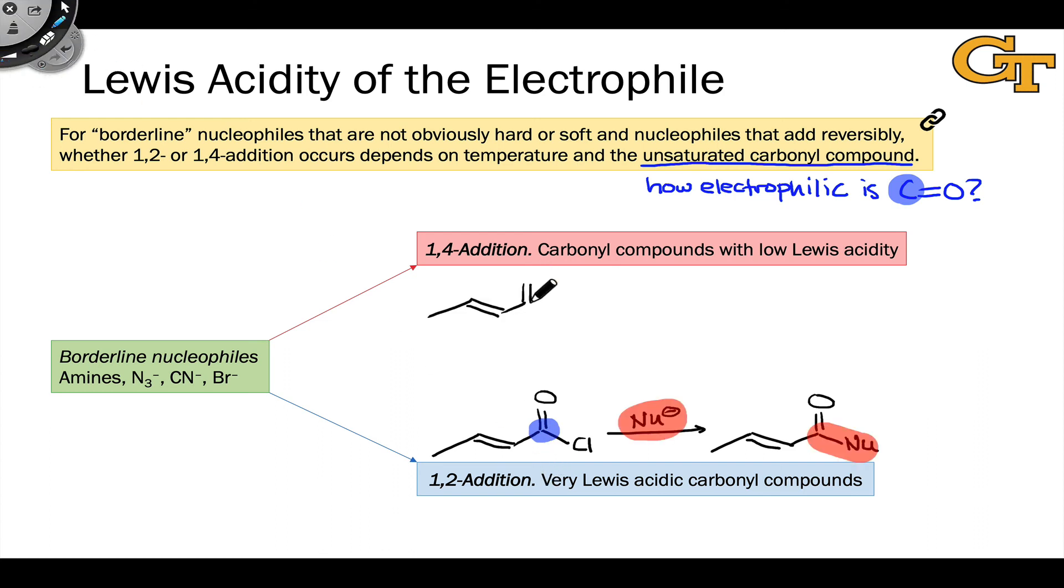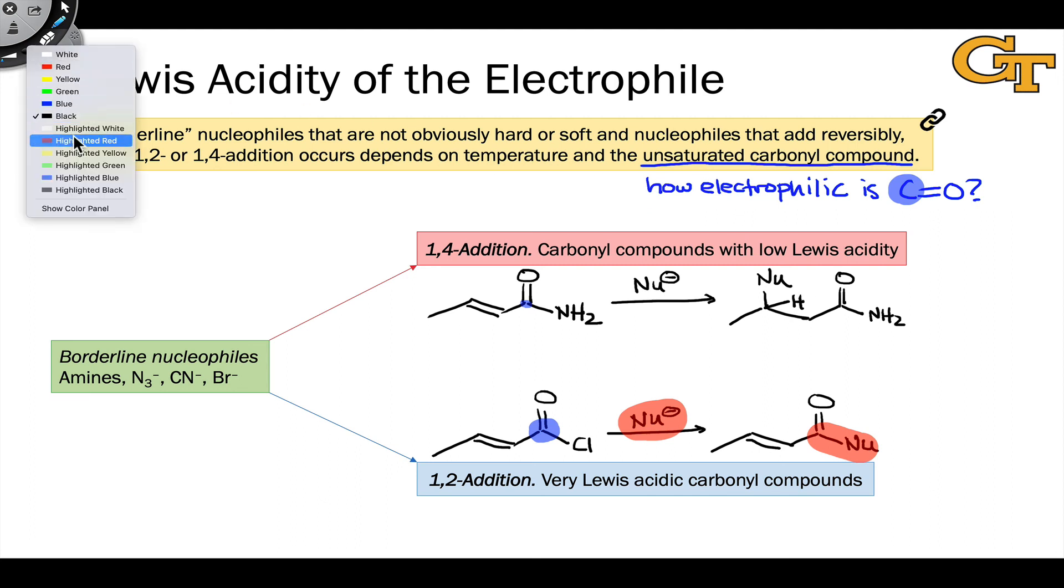For carbonyl compounds in which the carbonyl carbon is much lower in Lewis acidity, for example, enamides, where the carbonyl carbon is part of an amide, 1,4 addition tends to predominate. This is because the carbonyl carbon is not very Lewis acidic. We wouldn't expect many nucleophiles to add to the carbonyl carbon of an amide anyway, because we know that carbon already is not very Lewis acidic. And indeed, when an unsaturated amide is treated with a nucleophile, it will tend to add in a 1,4 fashion, not ever even touching that relatively unreactive carbonyl carbon.